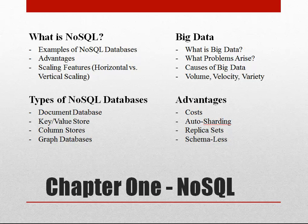There are four different types of NoSQL databases: document, which is what MongoDB is; key-value stores; column stores; and graph databases. We'll also talk about the advantages of NoSQL, some of which are the cost, auto sharding, replica sets, and schema-less design.